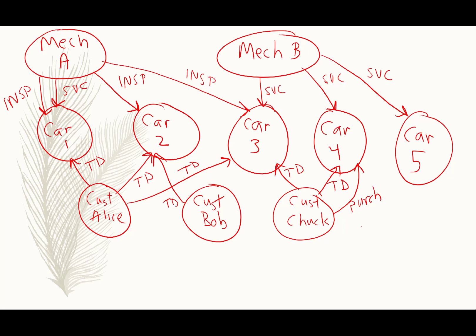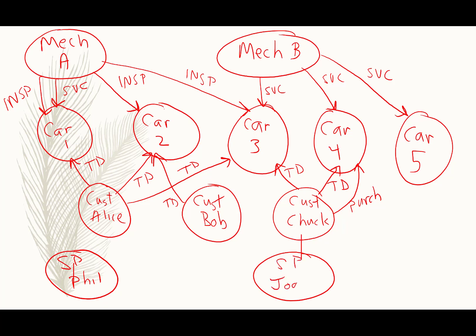Now we've drawn relationships between customers and cars. Finally, you may want to add salespersons into this network. Here's salesperson Phil and salesperson Joan. Joan has a relationship with Chuck — what's the relationship between a salesperson and a customer? If you've been to a car dealership, you know they tend to claim customers. So Joan claims Chuck, and Joan may also have claimed Bob.